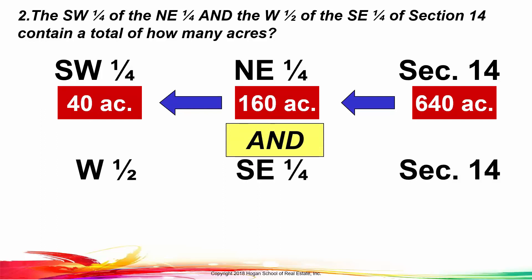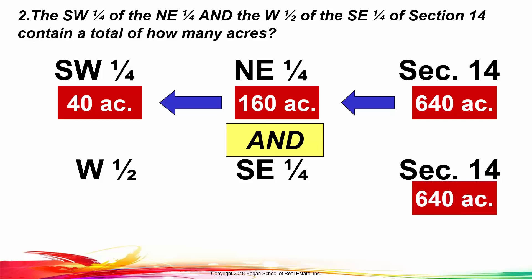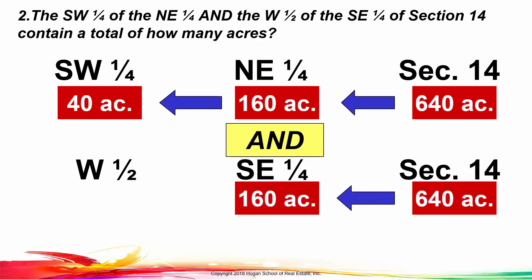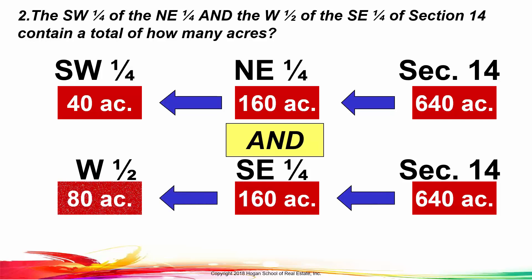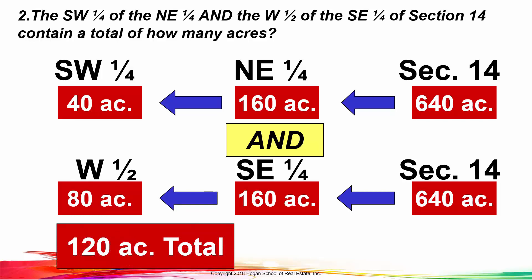We're not finished because the problem also says the west half of the southeast quarter of section 14. So we write that description down and go from right to left. The section has 640 acres, the southeast quarter is 160, and the west half of that is 80 acres. The problem asks for the total number of acres, so 40 plus 80 is 120 acres.